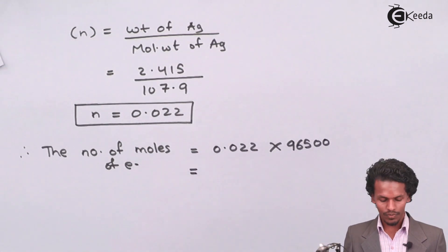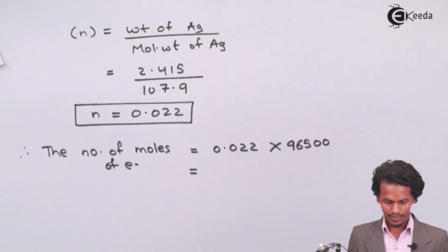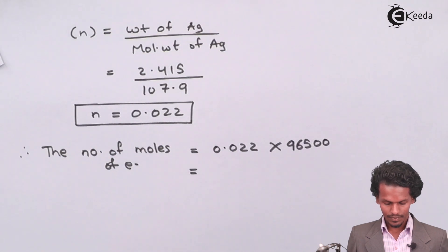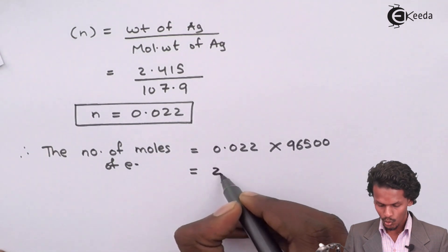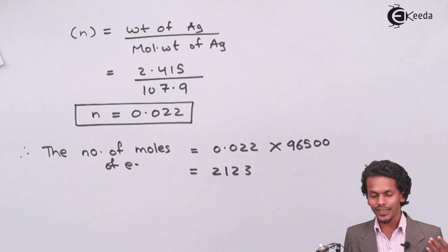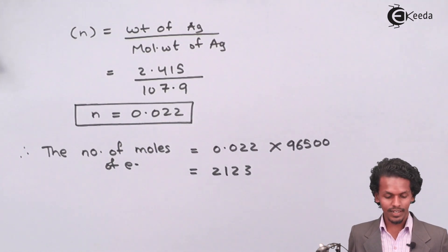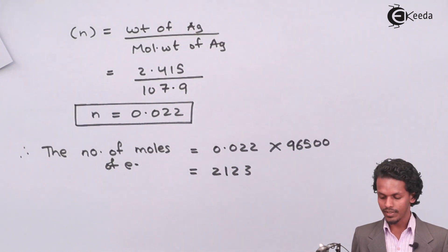This gives us a value of 2123 coulombs. This is the number of moles of electrons — expressed in terms of charge — participating in the whole reaction in this electrolytic cell.